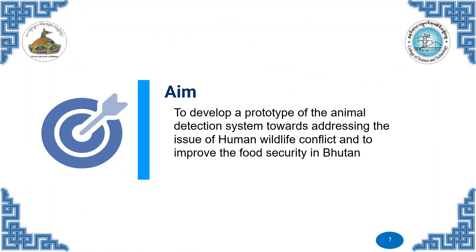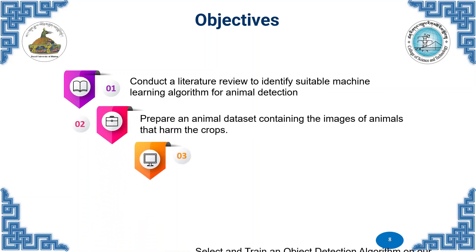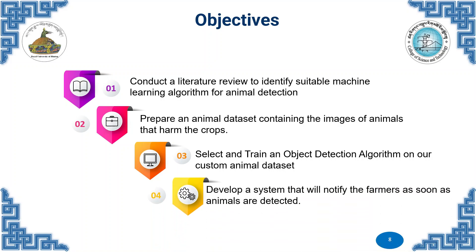The aim of our project is to develop a prototype of an animal detection system to address the issue of human-wildlife conflict and to improve food security in Bhutan. We have four objectives: first, to conduct a literature review to identify a suitable machine learning algorithm for animal detection; second, to prepare an animal dataset containing images of animals that damage crops; third, to select and train an object detection algorithm on our custom animal dataset; and finally, to develop a system that will notify the farmer as soon as animals are detected.